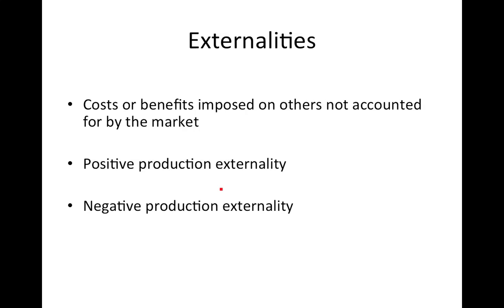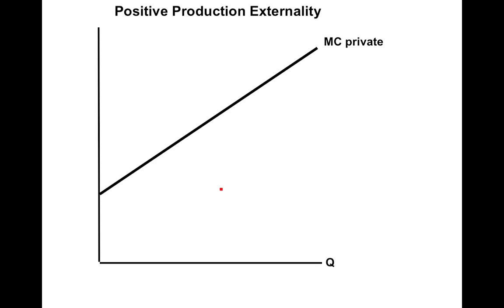A negative production externality is just the opposite. The classic example is pollution created through a production process — toxic waste into a river hurts farmers downstream, and unless there's a government intervention, the firm will not take that societal cost into account. So let's first analyze a positive production externality.